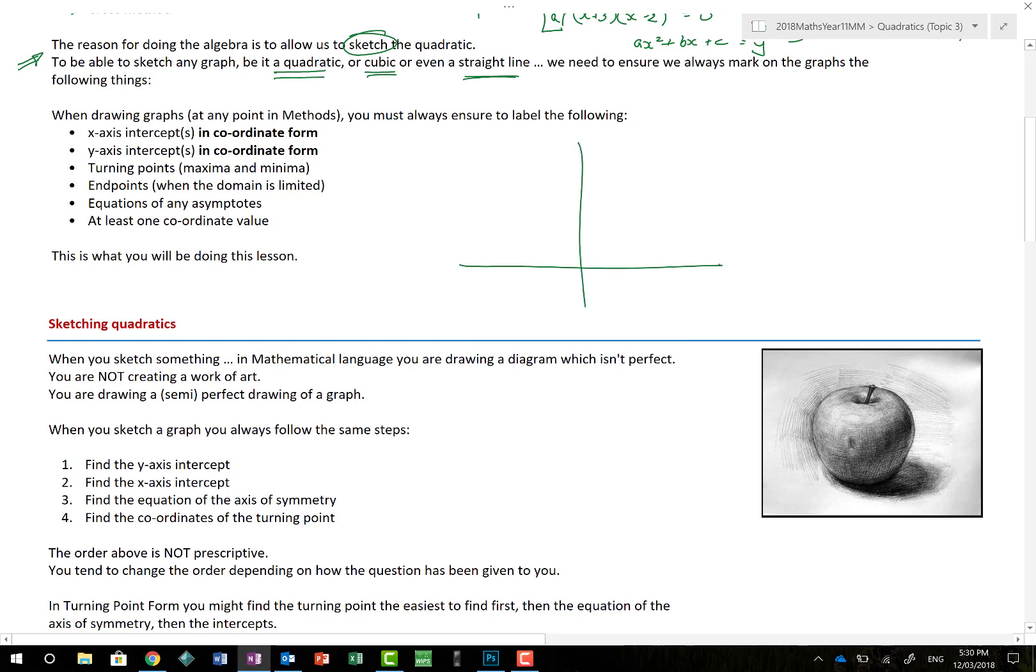Whether it be a quadratic, or a cubic, or even a straight line, we need to ensure we always mark on the graph the following things. X-axis intercepts. I'm going to draw the picture of a cubic, for example. You always have to make sure that you label X-axis intercepts. And that does not mean by putting a plus 2 there, a plus 4 there, and a minus 3 there. That's not labelling it. You actually have to label it as X is minus 3 comma 0. This one here would be 2 comma 0, and this one here would be 4 comma 0.